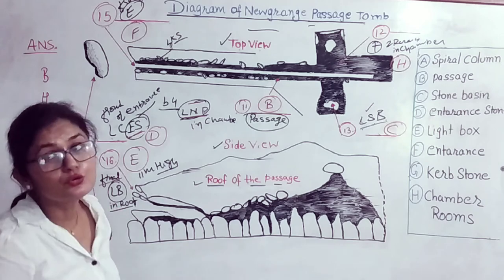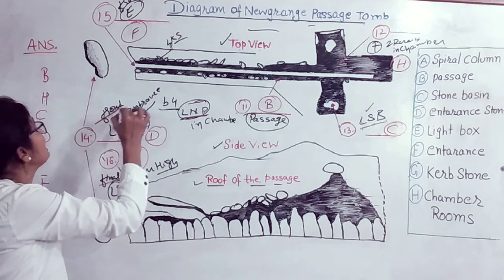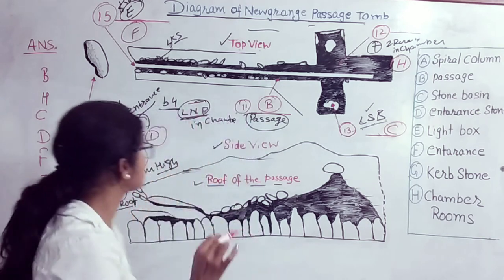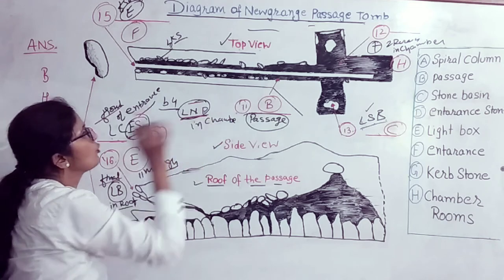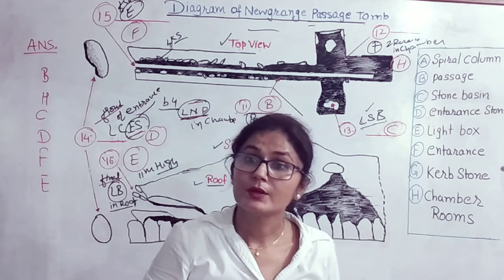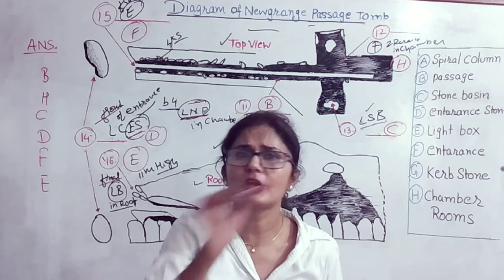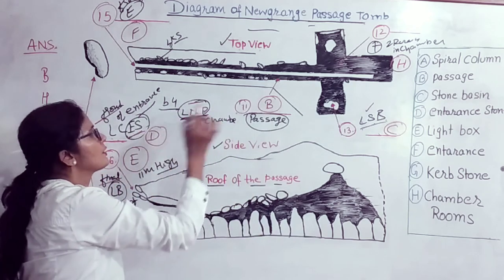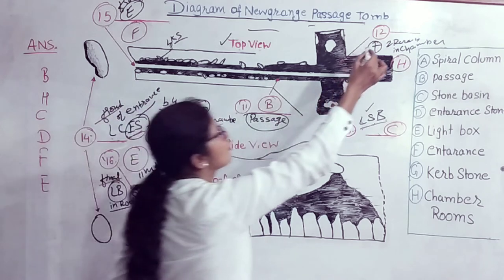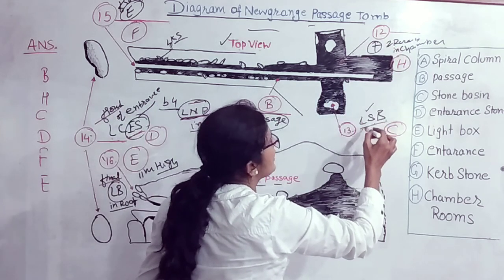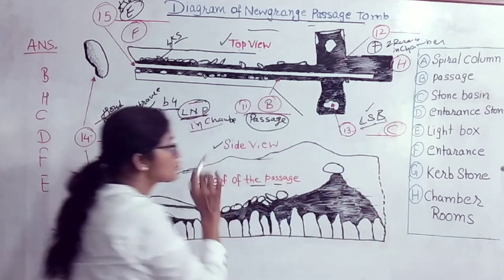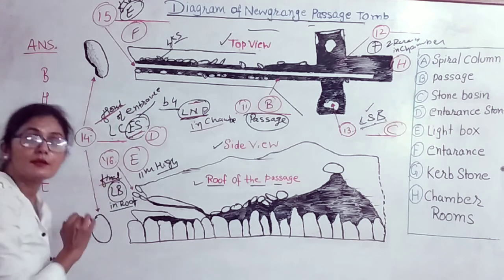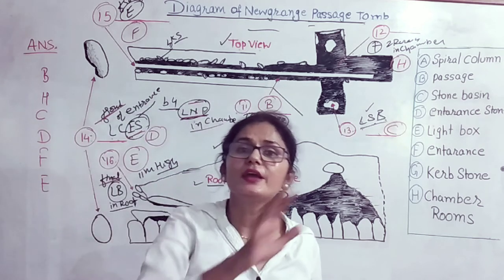Write shortcuts as the speaker speaks — you don't have time to write full sentences or full words. I wrote: long narrow passage, cross for the chamber, long stone basin, entrance stone, front. Writing shortcuts as you listen solves the common problem students have of missing answers. The labeling diagram in both listening and reading becomes very easy with this method.